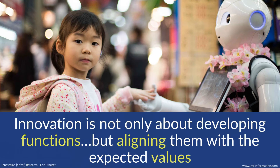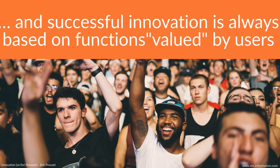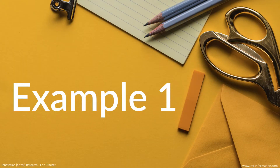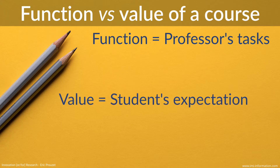What we see here is that as researchers, if we want to develop innovation, it's not only about developing functions — what will be important is that we must align them with the expected values. Successful innovation is always based on functions valued by users, and the connection or discrepancy between function (what the researcher develops) and value (what users expect) will be the key point for finding successful innovation. Let's take an example: a teacher building a course. The professor's function is to create the course.